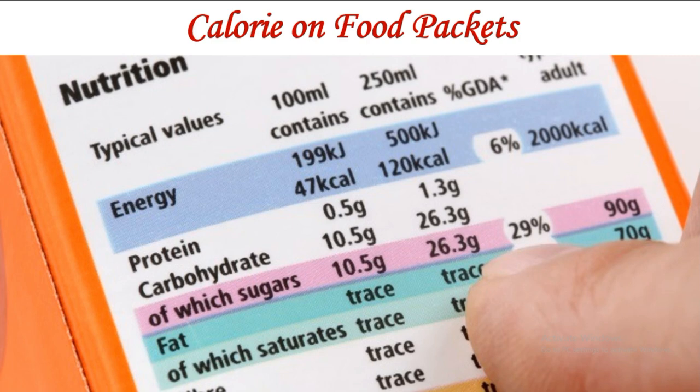So the calorie on a food package is 1000 times larger than the calories used in chemistry and physics. For example, 1 gram of fat gives us 9 kilocalories in the nutritional world, but the same 1 gram of fat gives 9000 calories in the scientific world. I hope that clears up the confusion between calorie, kilocalorie, and kilojoules.